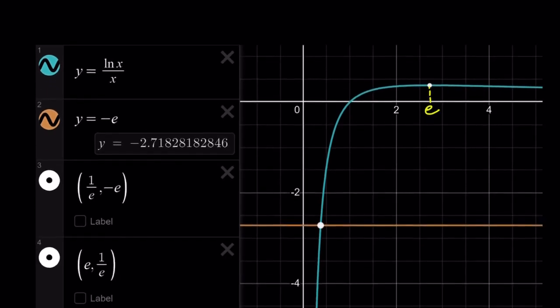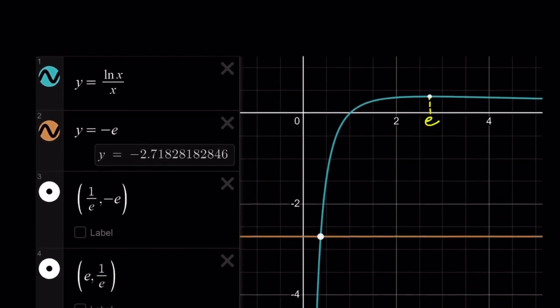So, now, we have the graph. What does the graph tell us? So, we are trying to find, solve the equation ln x over x equals negative e. So, we're looking for the intersection point of these two functions, y equals ln x over x and y equals negative e.